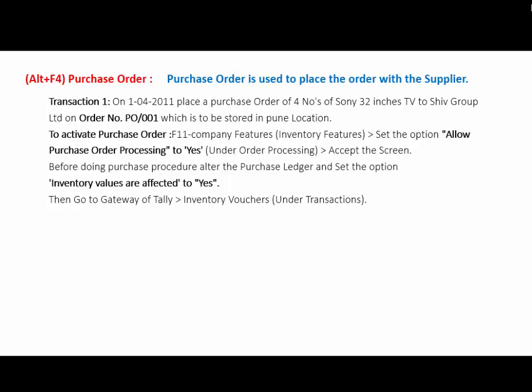For example, on 1st April 2011, place a purchase order of 4 units of Sony 32-inch TV to SHU Group Ltd. The order number is PO/001, which is to be stored in Pune location. For making this entry, to activate the purchase order, press F11 Company Features. In that, go to Inventory Features and set the option Allow Purchase Order Processing to Yes, under the heading Order Processing, and accept the screen.